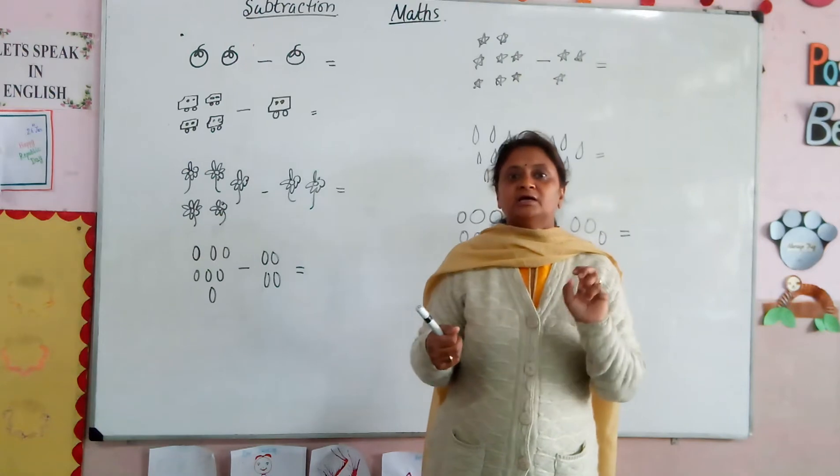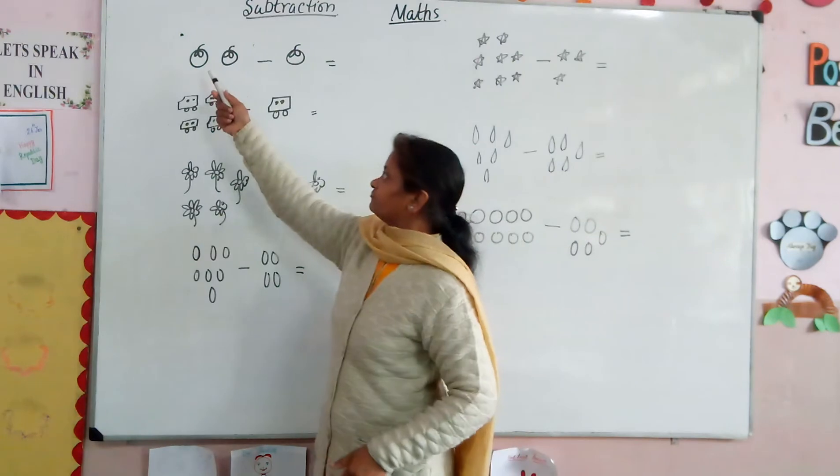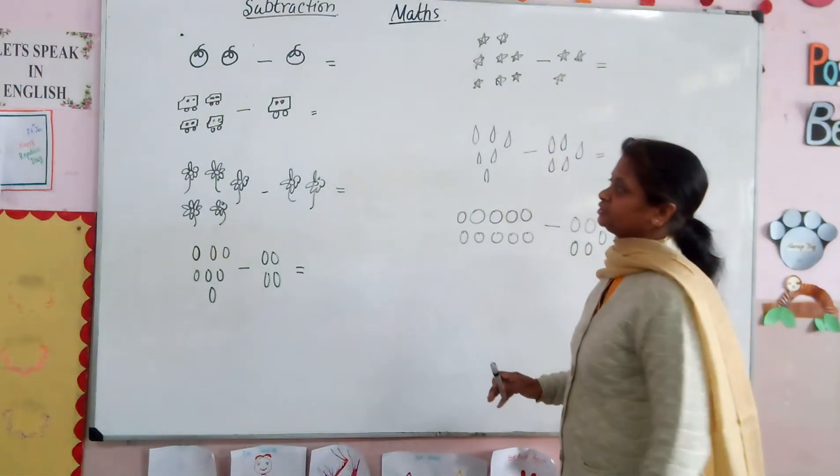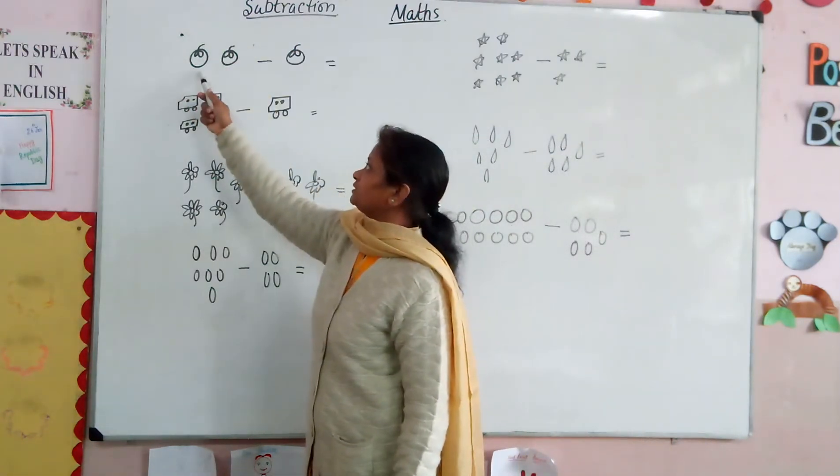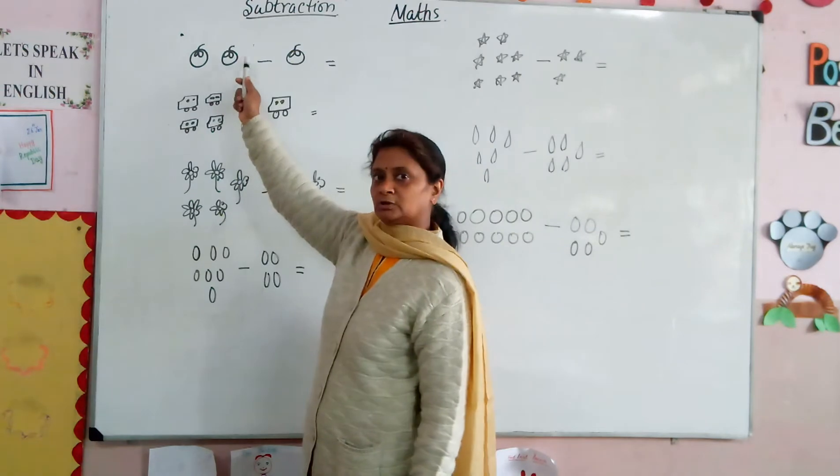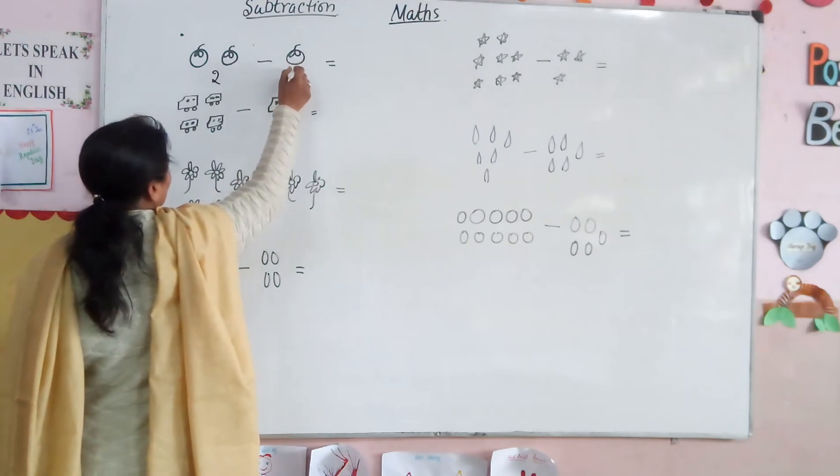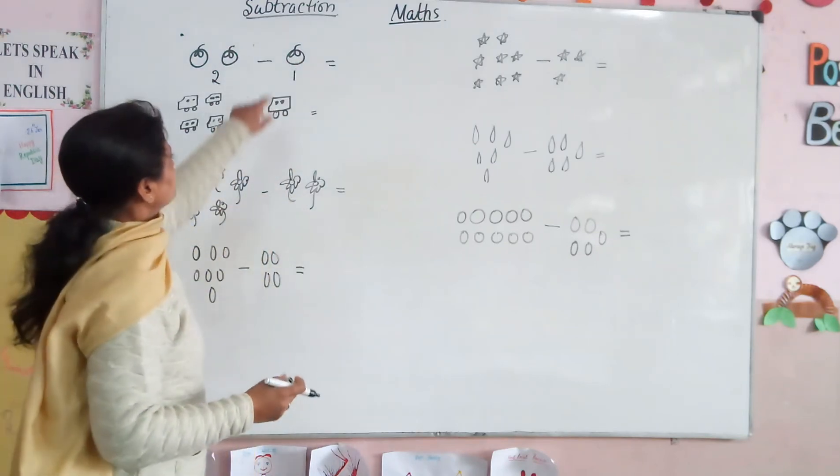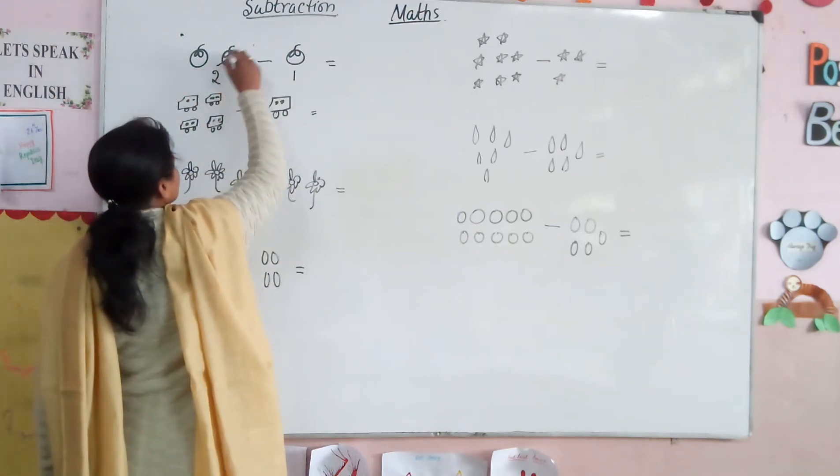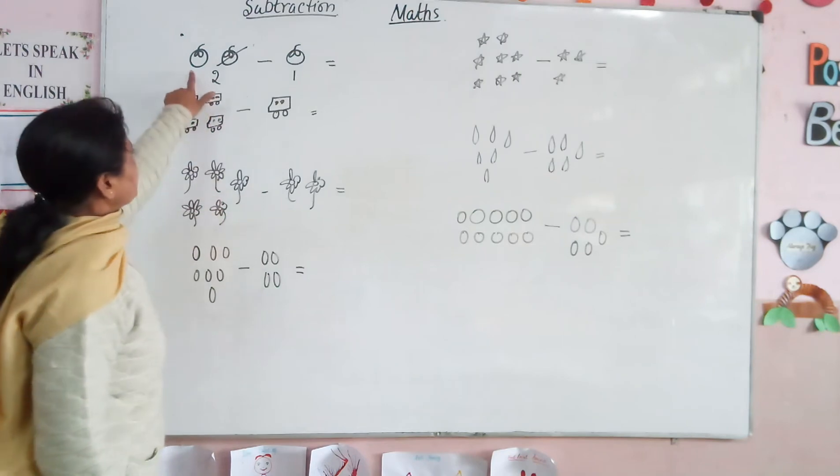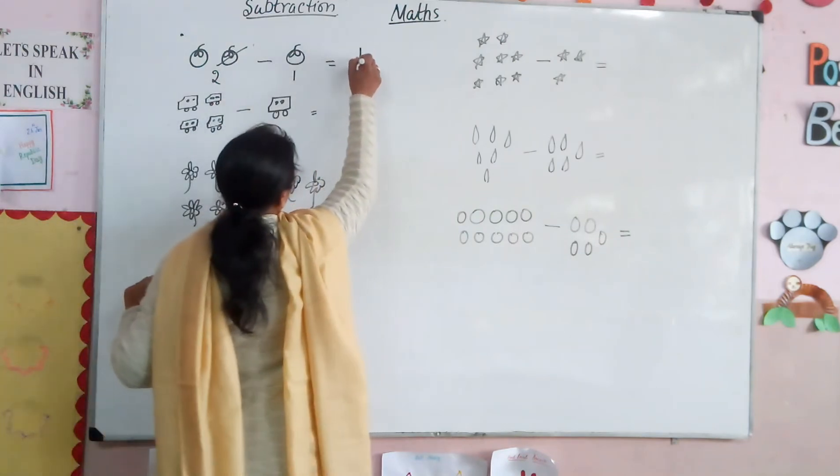How many left? Left means subtraction, take away. So here we have some pictures. This is the picture where we have two tomatoes, one and two. How many left? You have two and take away one. We have two tomatoes and cut one. How many left? This is one. So you can write here, one.